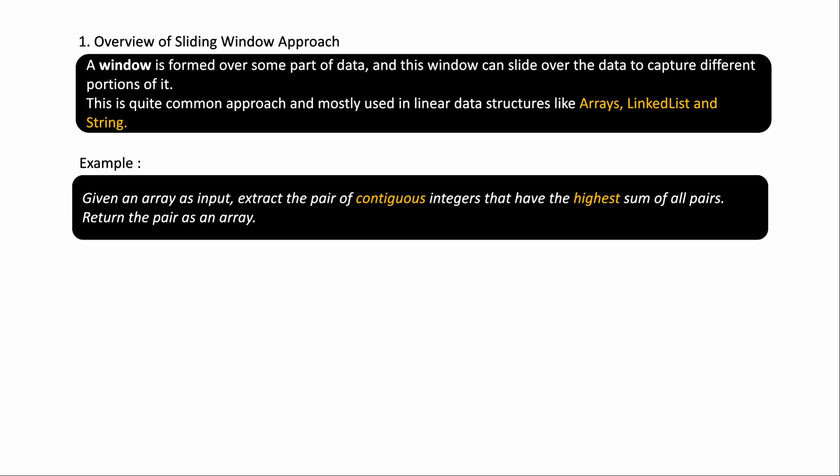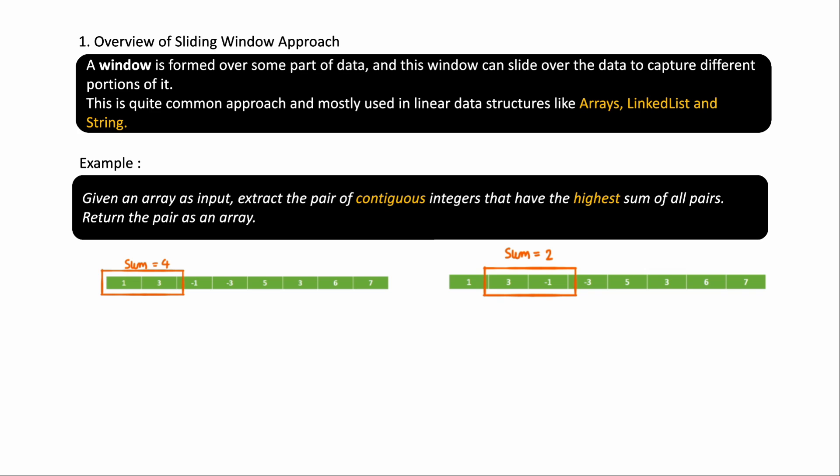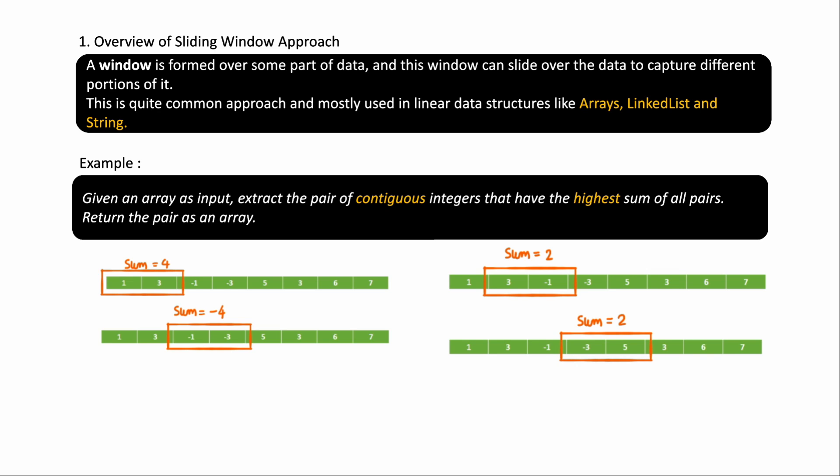For example: given an array as input, extract the pair of continuous integers that have the highest sum of all pairs and return that pair as an array. We want to find two continuous numbers where the sum is highest. We start with the first two numbers, getting a sum of four, then move one position right getting another sum, and this continues till the end. The window size is two, and each time it slides one position to the right.